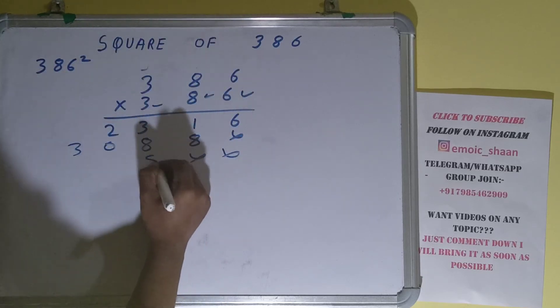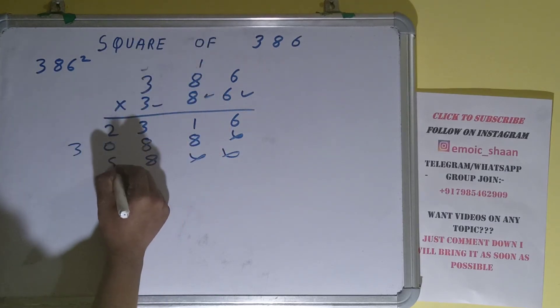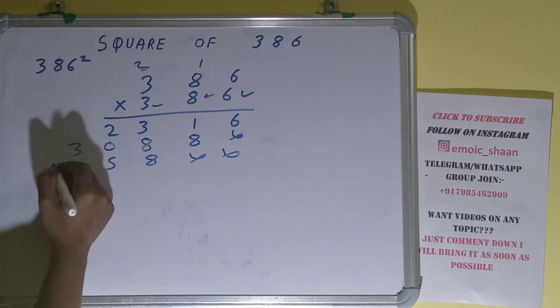Now this 3. 6 times 3 is 18, 1 carry. 3 times 8 is 24 plus 1 is 25, 2 carry. 3 times 3 is 9 plus 2 is 11.